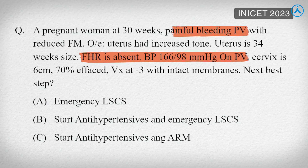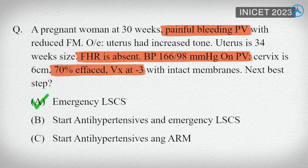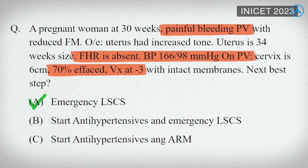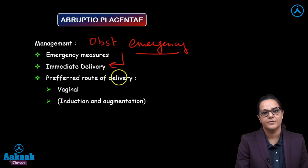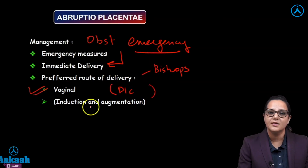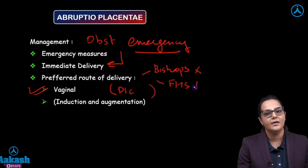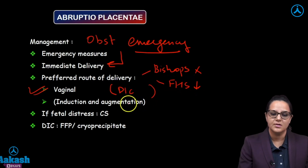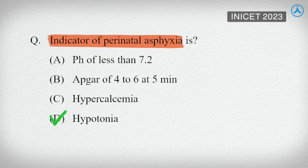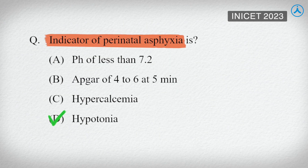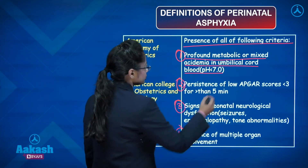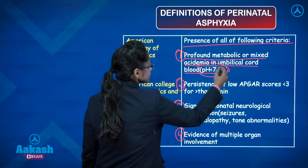It is an obstetrical emergency — we have to immediately deliver the baby. If the Bishop's score is not good or the fetal heart rate is dropping, we will go for a caesarean section. Profound metabolic or mixed acidemia on umbilical cord blood is defined by a pH of less than 7.